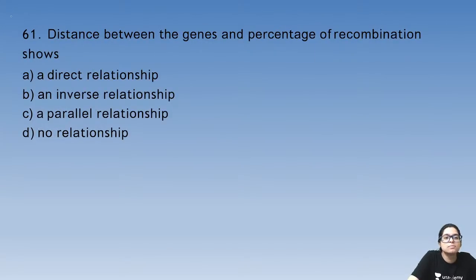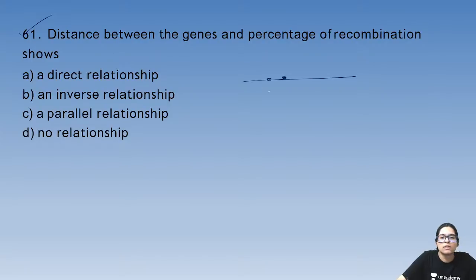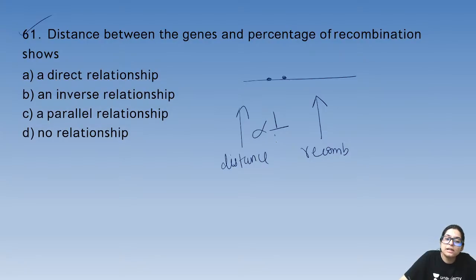Question 61: the relationship between distance between genes and percentage of recombination — greater the distance, greater the recombination, because greater distance means less linkage, and less linkage means more recombination. The answer is A.